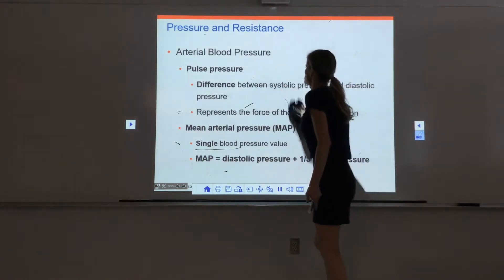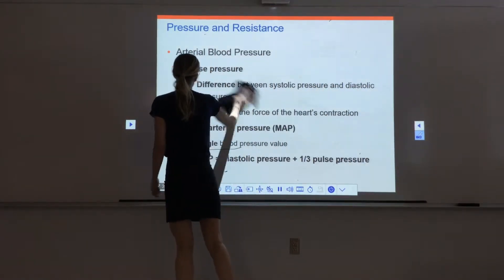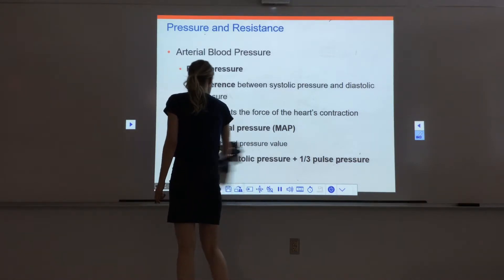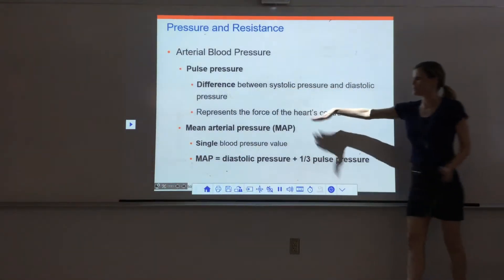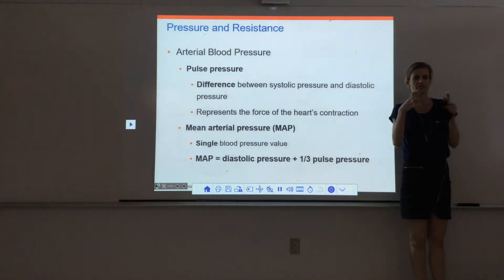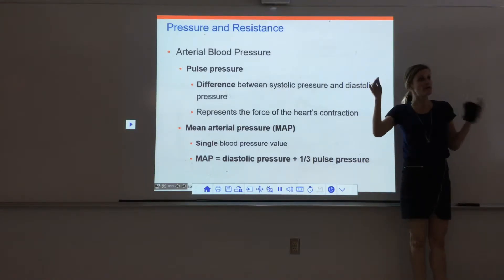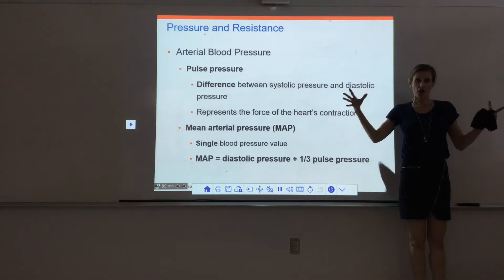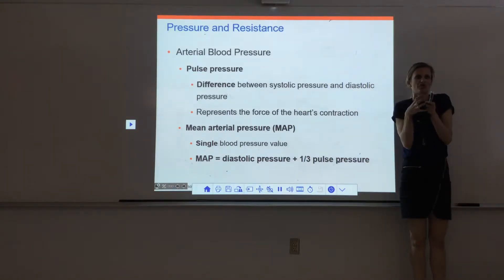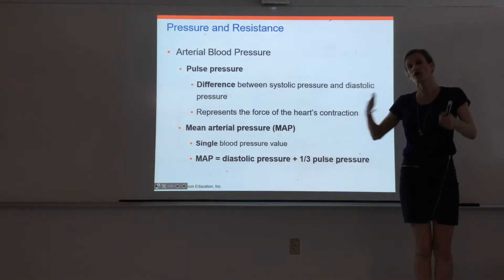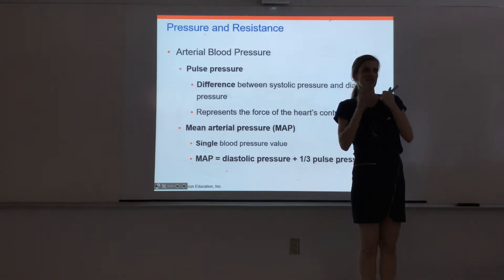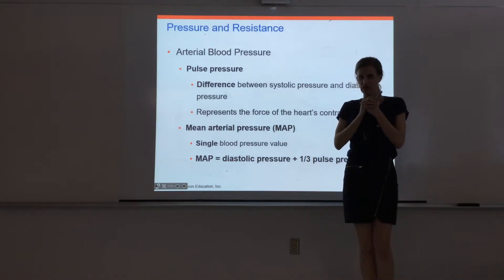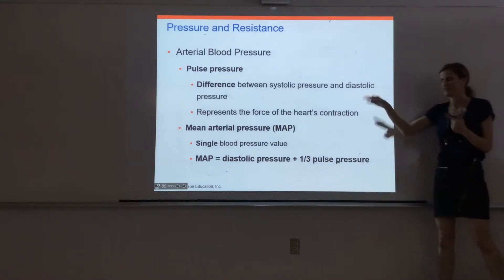The pulse pressure is the difference between the systolic and diastolic pressure. It essentially tells you how much force the heart's contraction is generating. If there's a bigger difference between systolic and diastolic, the heart generated even more pressure or force. Comparing when the heart is and isn't contracting, you can see the heart generated 40, 30, or 45 millimeters of mercury — it roughly correlates with how hard the heart is actually contracting.